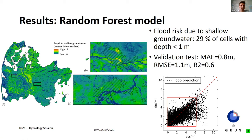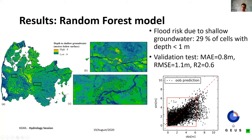Here are some results. This is the map at 50-meter resolution, and we zoom in on two areas with urban settings where information on the shallow groundwater table is important. We could highlight flood risk — 30% of cells in one station area have a depth to the groundwater table of less than one meter. For validation, using out-of-bag prediction and ten-fold cross-validation, we ended up with a mean absolute error of 80 centimeters and a root mean square error of 1.1 meters. Compared to the process-based model's mean absolute error of more than three meters and RMSE of more than five meters — quite an improvement.